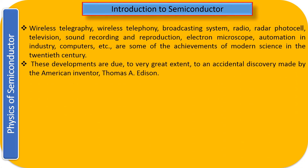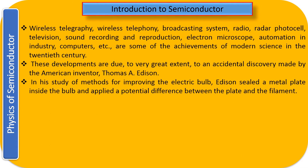This development is due to a very great extent to the accidental discovery made by the American inventor Thomas Elva Edison. As you know, he invented the bulb. To improve the efficiency of the bulb, in his study of methods of improving the electric bulb, Edison sealed a metal plate inside the bulb and applied a potential difference between the plate and the filament.